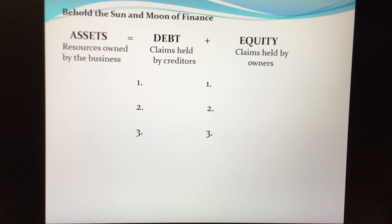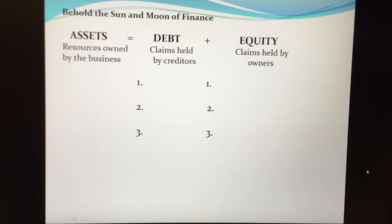Let's pick up now in our discussion of how the values of debt and equity will change as the value of the assets change. I call this the sun and moon of finance. I hope you'll agree that this is a pretty basic but insightful way of looking at how value created through the assets of the company is reflected in the values of the debt and equity.